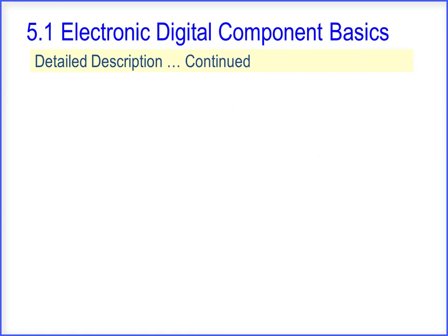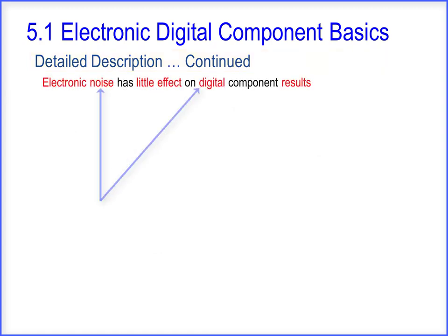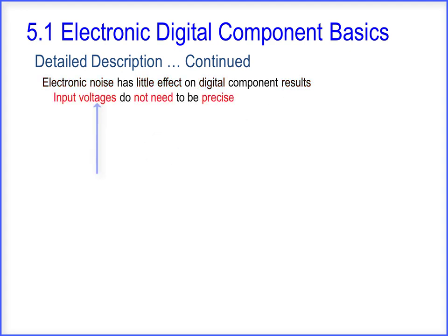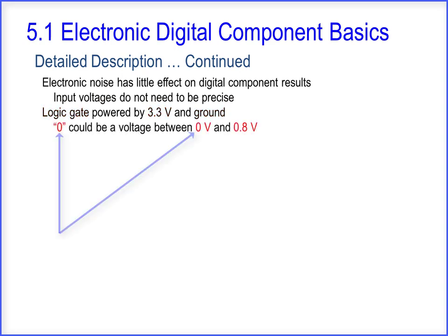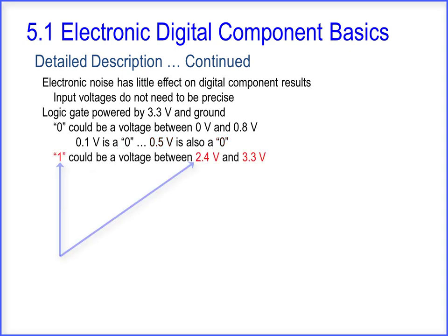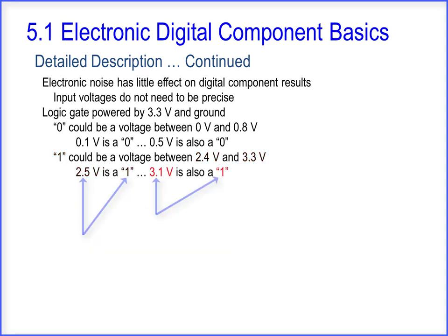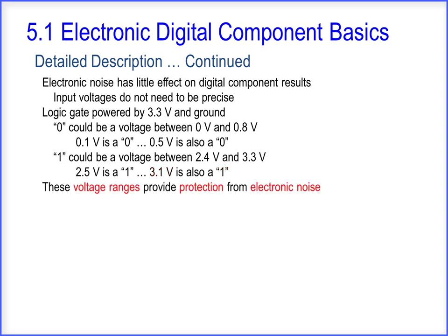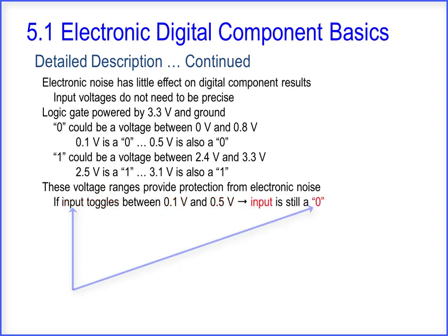Electronic noise has little effect on digital component results because the input voltages do not need to be precise. For a logic gate powered by 3.3 volts and ground, 0 is any voltage between 0 volts and 0.8 volts — 0.1 volts is a 0, and 0.5 volts is also a 0. A 1 is any voltage between 2.4 volts and 3.3 volts — 2.5 volts is a 1, and 3.1 volts is also a 1. These voltage ranges provide protection from electronic noise. If the input toggles between 0.1 volts and 0.5 volts, the input is still a 0.